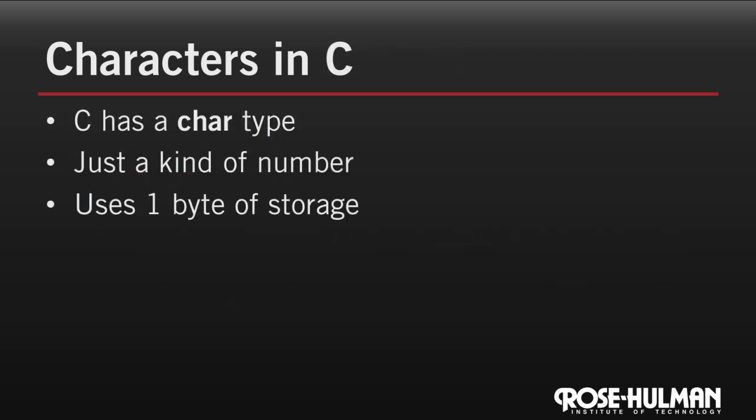In contrast, C has a built-in char type, and this is really just a kind of number. It uses just a single byte of storage. Let's look at an example.